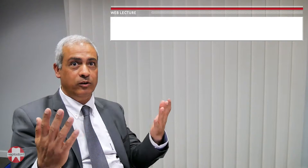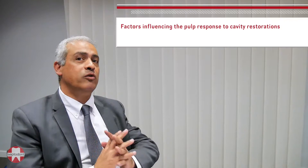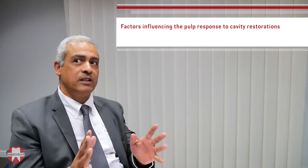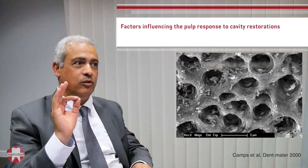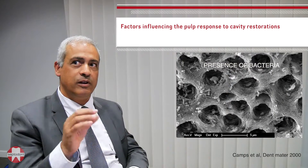Among the numerous applications of Biodentine, it can be applied directly onto the pulp or indirectly — what is called indirect pulp capping. In both situations, the major factor for the success of this treatment is to eliminate bacteria. If you eliminate bacteria, you are successful.